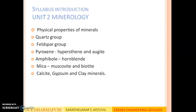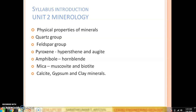The second unit is about Mineralogy. Mineralogy is the study of minerals. Minerals are the basic elements of which the Earth's rocks are made. In this unit, we will be studying about various physical properties of minerals — once you know the physical properties, you can differentiate between various minerals. We will also study common types of minerals like the quartz group, feldspar group, pyroxene group (including hypersthene and augite), amphibole group (including hornblende), mica group (muscovite and biotite), and the most commonly used minerals in civil engineering: calcite, gypsum, and clay minerals.